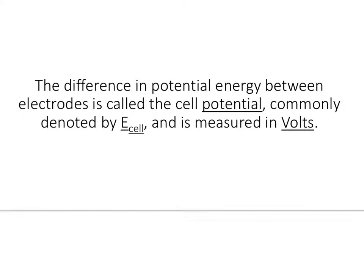So the difference in potential energy between the electrodes is called the cell potential. Commonly, we denote that by E sub cell, E referring to potential. Of course, we start potential with an E, and cell referring to the cell potential. But this is commonly measured in volts. So whenever you hear the voltage of something, that's referring to its cell potential or the potential energy of that cell.